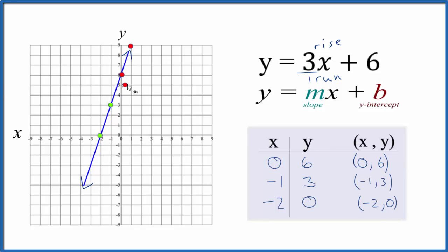We can go the opposite direction too. We could go down 3, 1, 2, 3 and then over to the left 1. And that's on our line. And we could keep doing that 1, 2, 3 over 1, 1, 2, 3 over 1. And all the points are going to be on the line there.